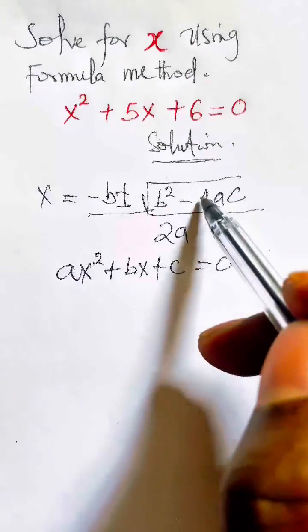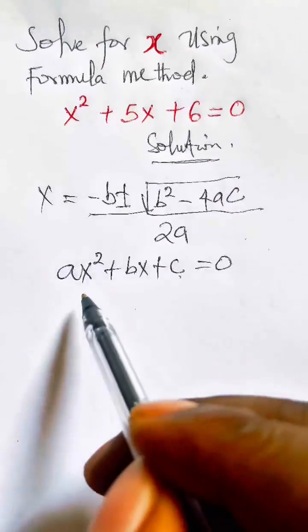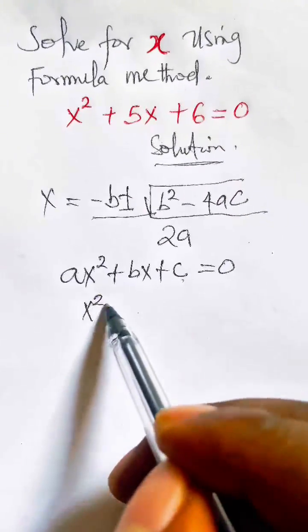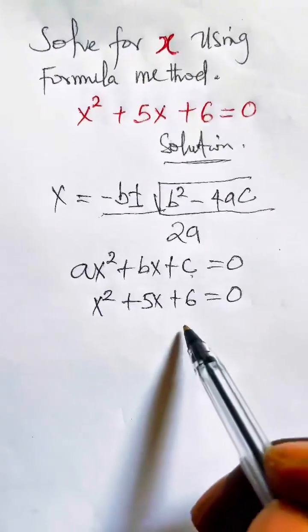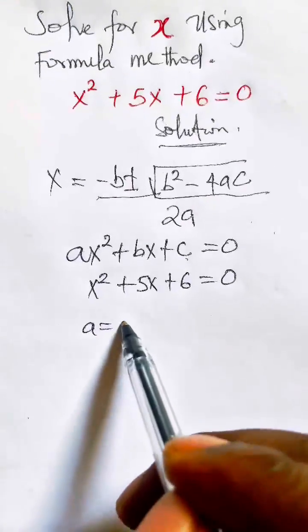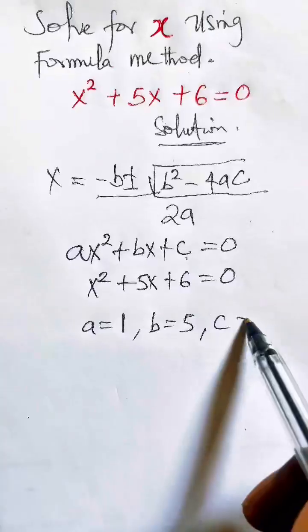Now this is the way we can compare to the original equation. The equation we can give: x squared plus 5x plus 6 equal to 0. You notice a equals 1, b equals 5, and c equals 6.